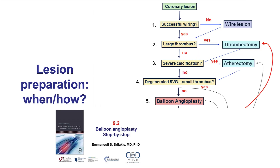The next question is whether there is PCI of a degenerated vein graft, or if there is thrombus but only a small amount. These are the two case scenarios in which one might consider performing direct stenting. Degenerated vein graft can lead to distal embolization, so direct stenting might reduce that risk. Similarly, predilatation with a small thrombus may cause embolization, whereas primary stenting can prevent this by trapping the thrombus behind the stent struts.